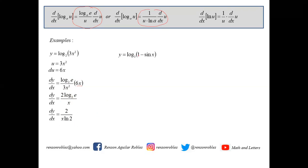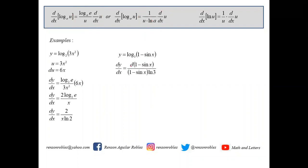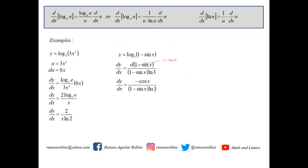For y equals log of (1 minus sin x) to the base 3, using the formula dy/dx equals the derivative of u over u times ln a. The derivative of (1 minus sin x) is negative cosine x, so dy/dx equals negative cosine x all over (1 minus sin x) times ln 3.